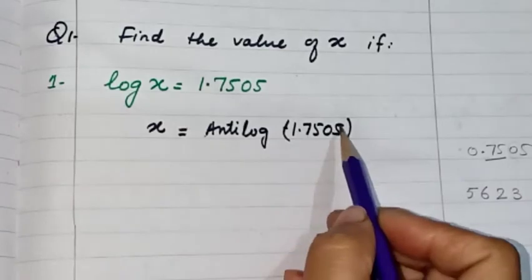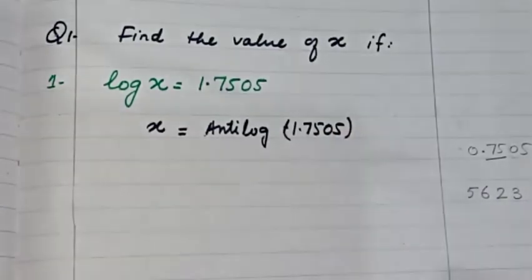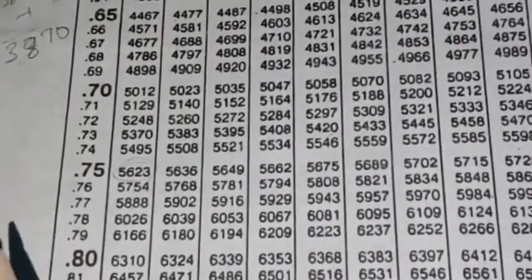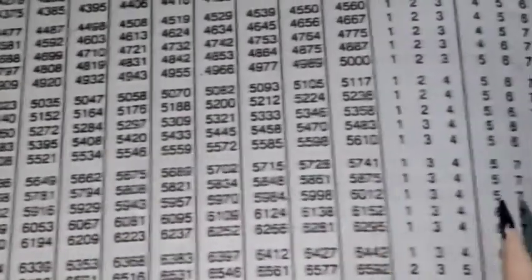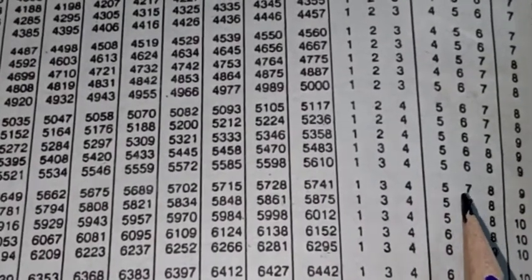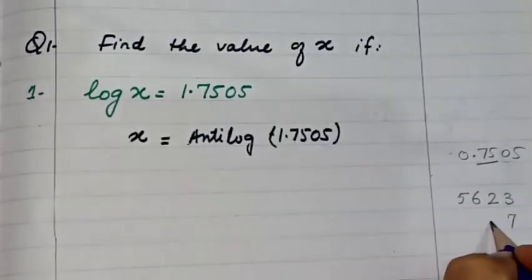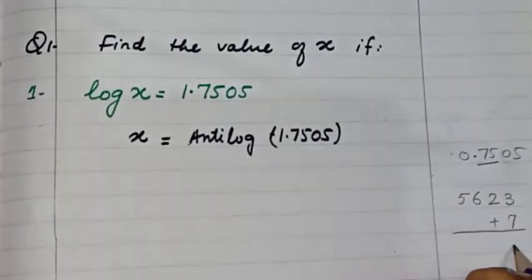Then we have another 5 at the end, so we have to go to the mean difference table and search for 5. In the same row 0.75, the mean difference table gives us 7 for the value 5. We add this 7 to get 5630.